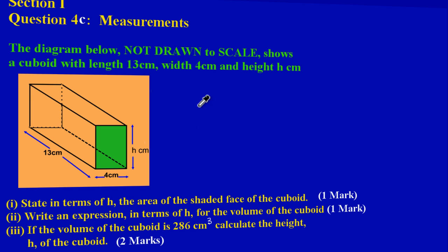Obviously we don't know that, maybe we're going to have to find that later on. Okay, now here in part 1 it states: state in terms of h the area of the shaded face of the cuboid, and that's an easy one mark. Now basically, let's just quickly go back to what we have learned earlier on.